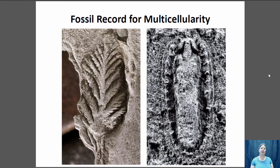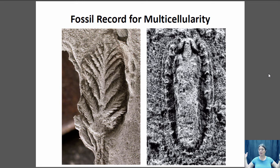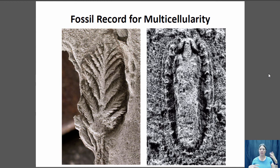Multicellularity is a relatively recent phenomenon. The first fossils we have of relatively complex multicellular organisms are from around 500 to 600 million years ago. In the grand scheme of things, life on this planet is about 3.7 billion years old, so it's only in the last half billion years or so that we've had these complex multicellular organisms — it's relatively recent.